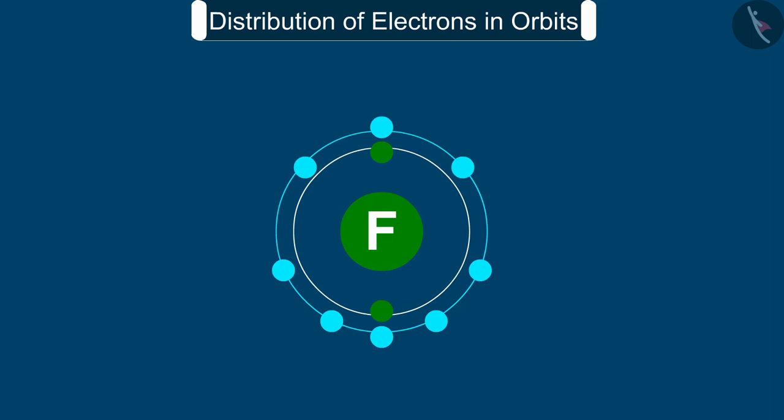Hence, its valency is determined by subtracting seven electrons from the octet and this gives you a valency of one for fluorine.